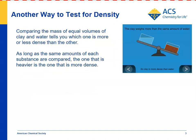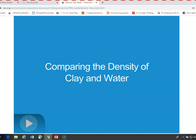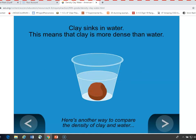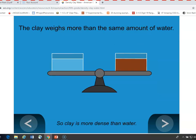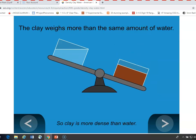Another way to think about whether a substance will sink or float is to compare an amount of substance to the same amount of water. If the substance is heavier than the same amount of water, the substance must be more dense than water. In the animation, the clay ball sinks in water. If we use the same amount of clay and water and put them on a scale, the clay is heavier, which means the clay must be more dense than water.